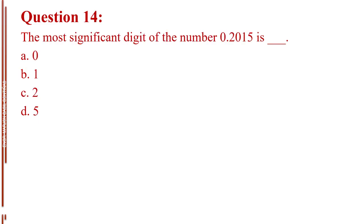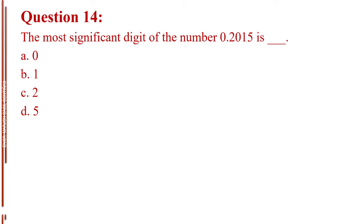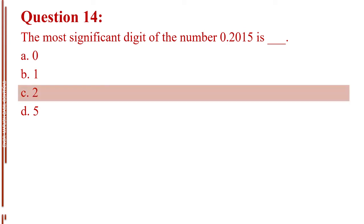Question number fourteen. The most significant digit of the number 0.2015 is blank. Letter A, 0. Letter B, 1. Letter C, 2. Letter D, 5. The answer is Letter C, 2.